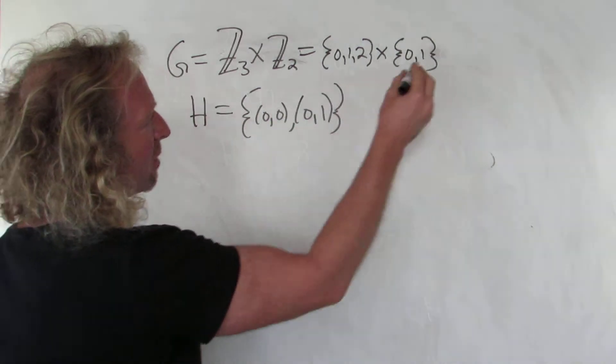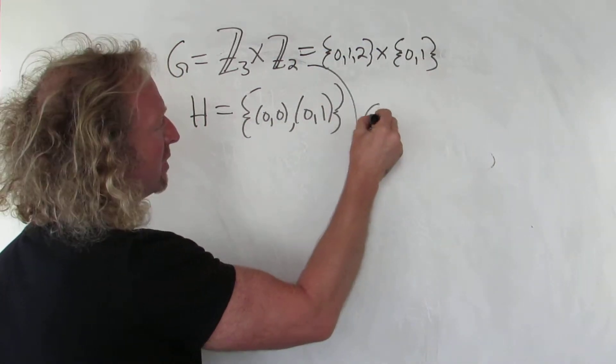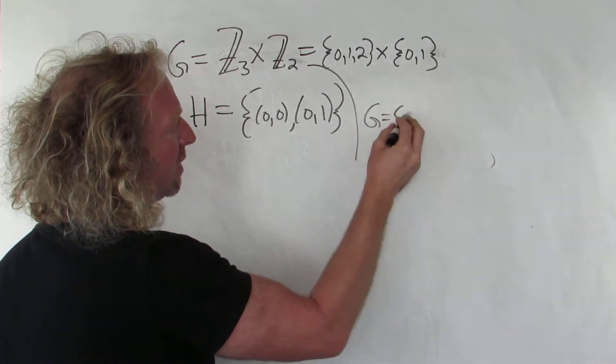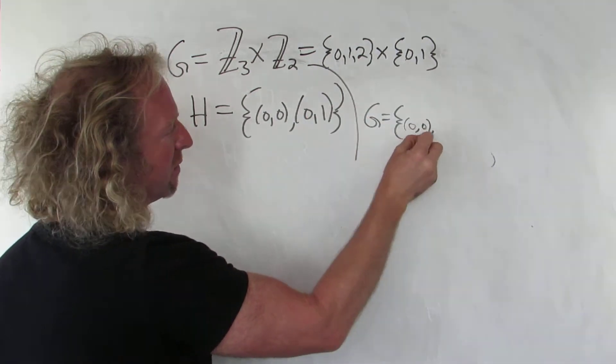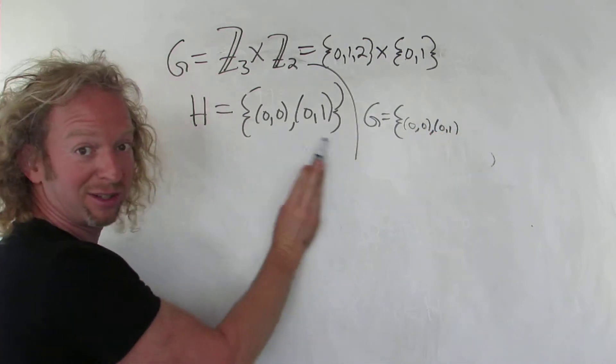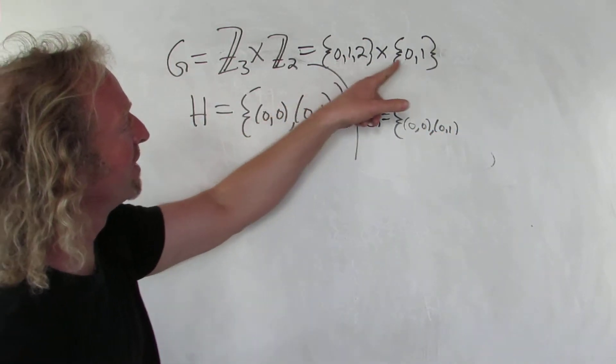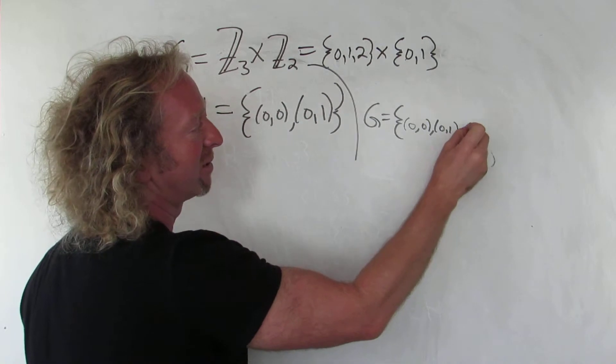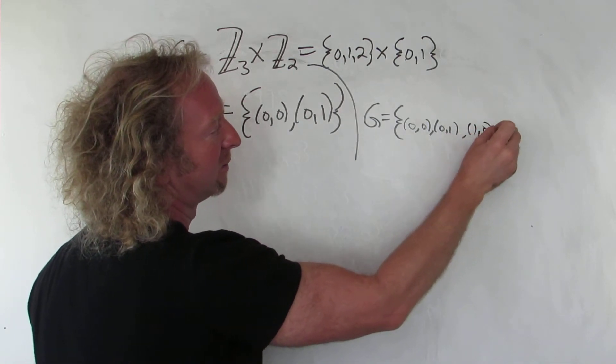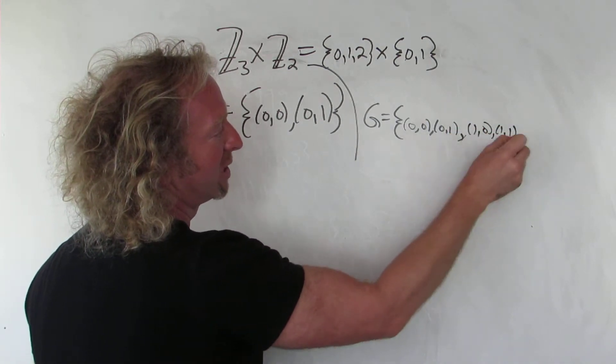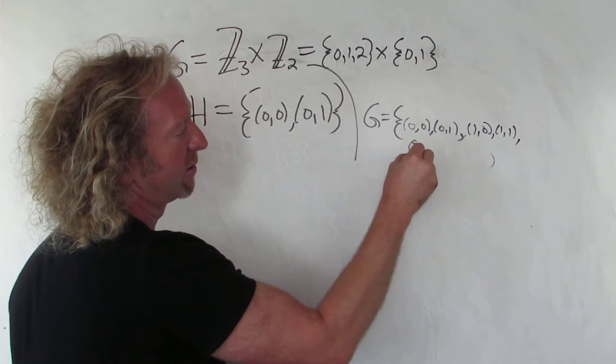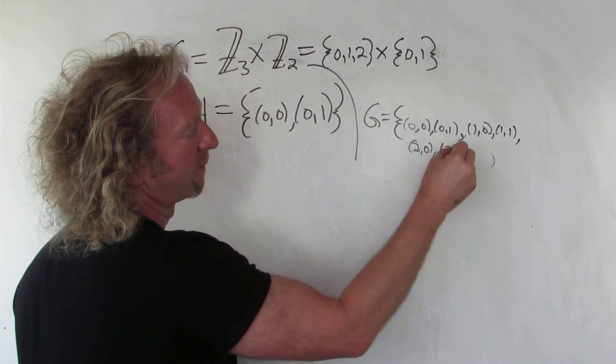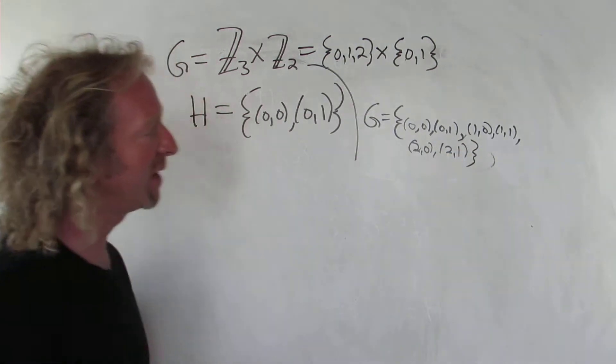So to form a direct product here, G would be (0,0), (0,1). So (0,0), (0,1) - that's H actually, that's pretty cool. (1,0), (1,1). So (1,0), (1,1). And just in case you can't see, I'll write it over here: (2,0), (2,1). So (2,0), (2,1).